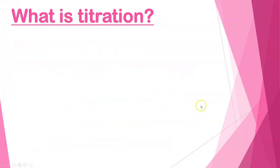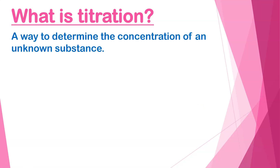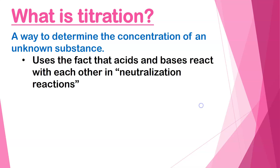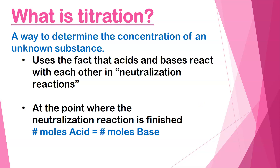What is a titration? A titration is a lab technique. It is a technique that we use to figure out what the concentration is of an unknown substance. We're going to use the fact that acids and bases react with each other and they neutralize. When an acid and base neutralize, the moles of acid and the moles of base have equaled each other, and we'll be able to use that information to help us do some calculations.